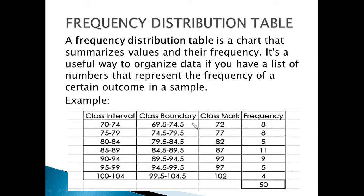Class boundary is the true upper and lower limits of a class interval. To compute for a class boundary, simply take the midpoint or the average of the upper limit and the lower limit of the next class interval. The third column is the class mark, which is also the midpoint of a class interval or class boundary. To compute for the class mark, we simply take the average of the lower limit and the upper limit. The fourth column is the frequency.